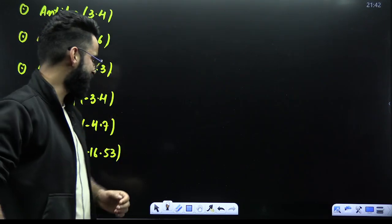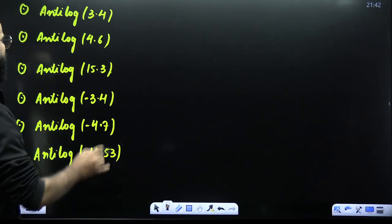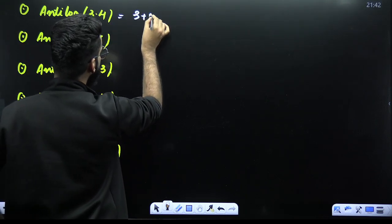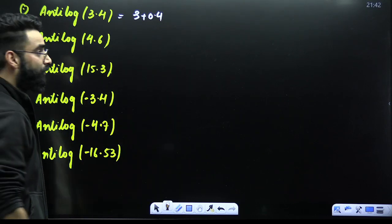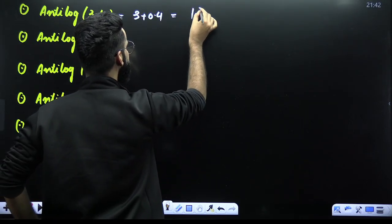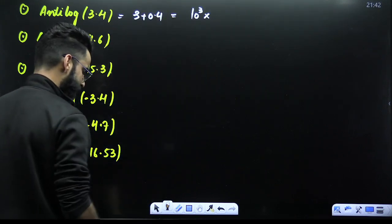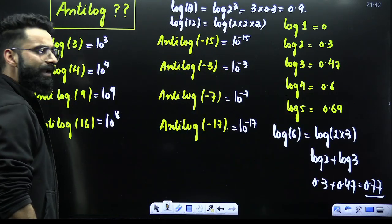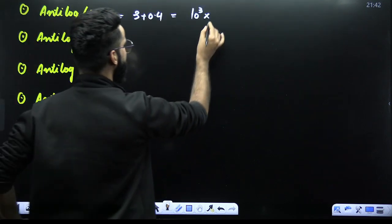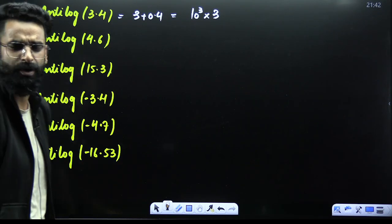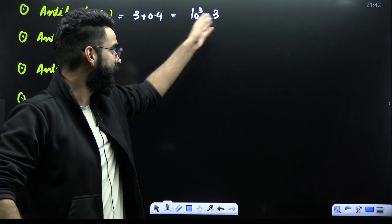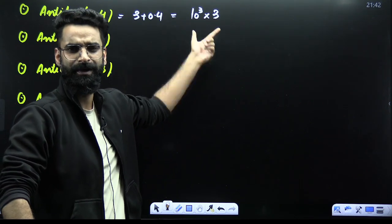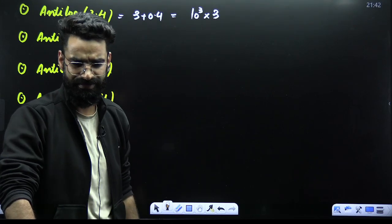Point number two: what if there are decimals included? For example, calculate NT log of 3.4. Split it as 3 plus 0.4. The 3 gives 10³ directly, and 0.4 is basically log of 3 approximately. So you can write the answer as 3 × 10³. It's an approximate value, not exact. You just have to see the options — whichever is closer to this will be the final answer.